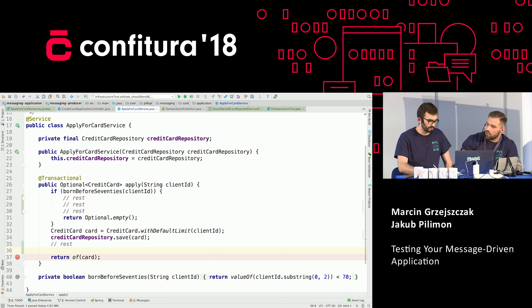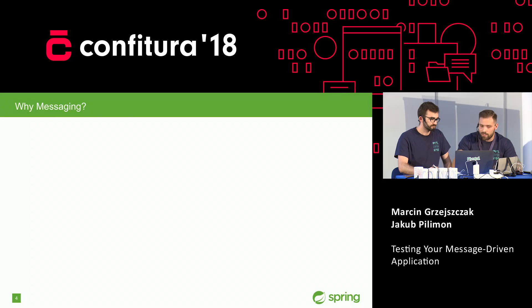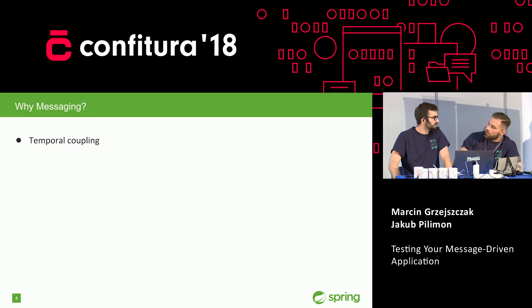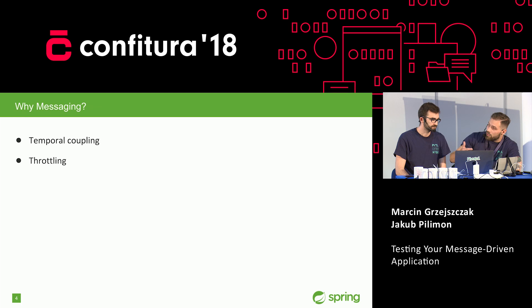Let's do it. Using messaging would give you certain things. For instance, if the second service is down and doesn't respond to your calls, you won't be affected because you have the man in the middle — the message broker. The temporal coupling — the need for two services to be alive at the same time — will be eliminated. Also, the consumers can process messages at their own pace, so they won't be overwhelmed by your producer.